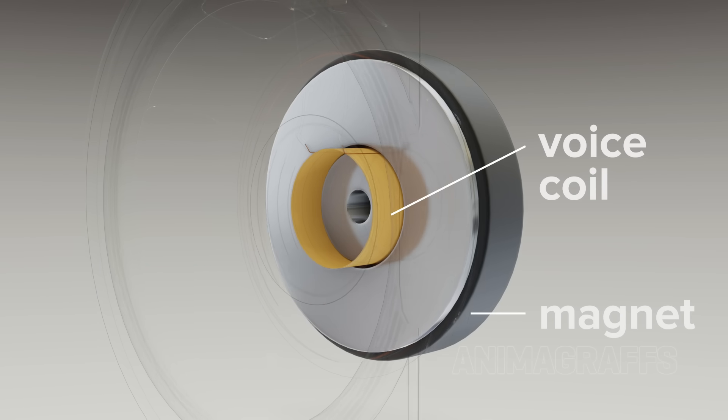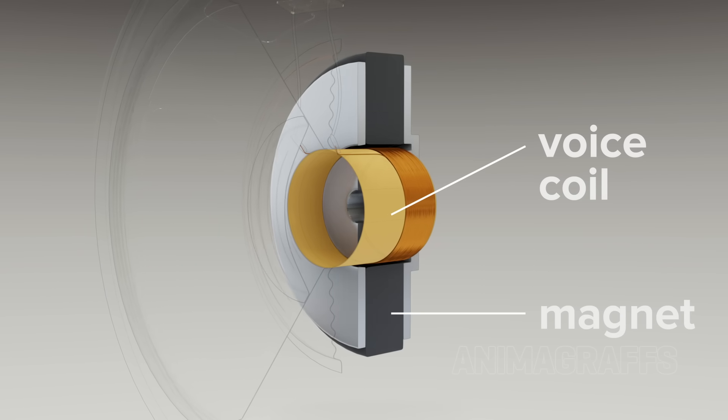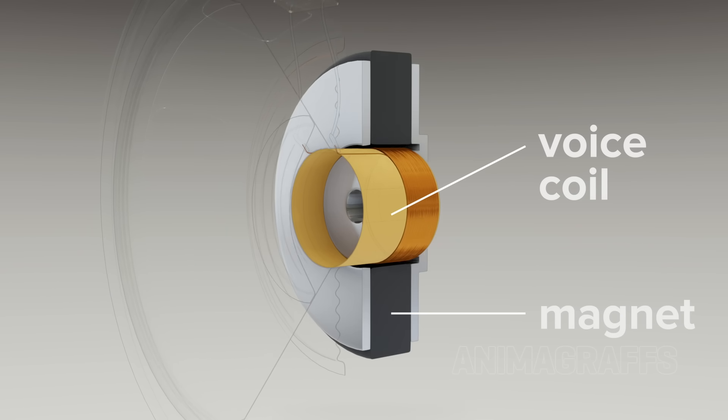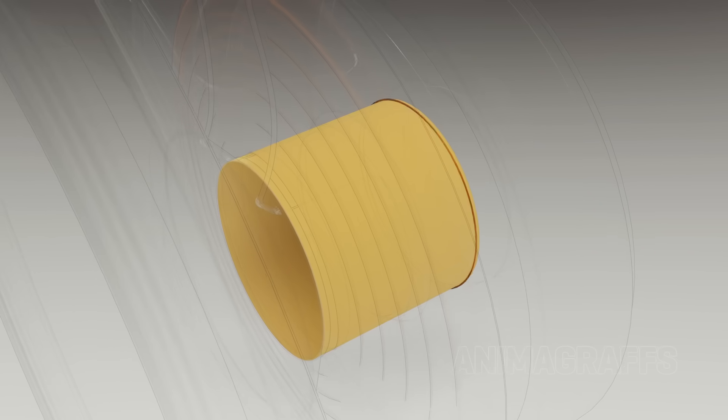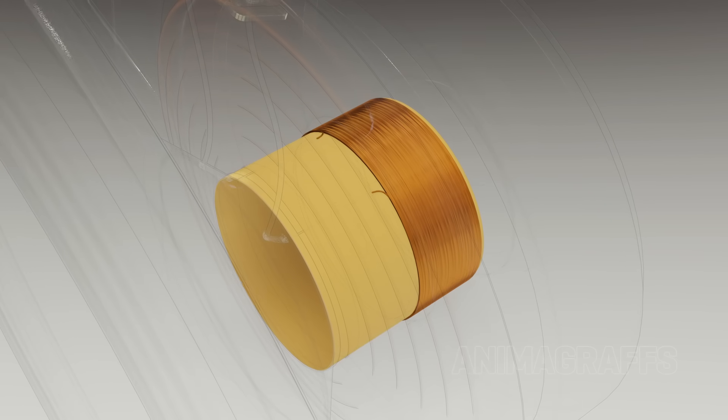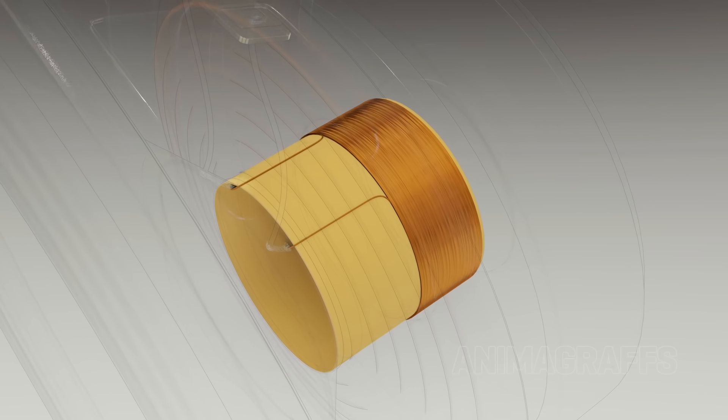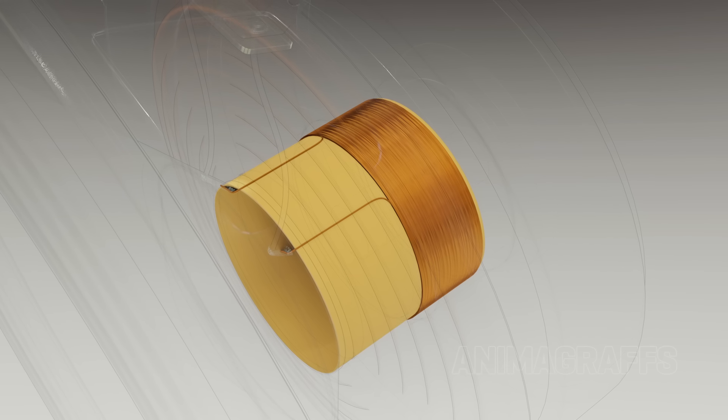The motor. A voice coil and magnet work together to form the speaker motor. The voice coil has a long section of thin copper wire wound many times around a heat-resistant cylinder called the former.